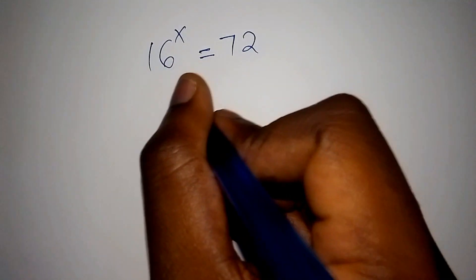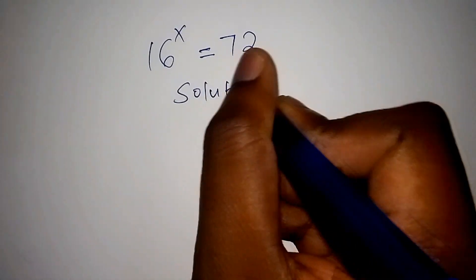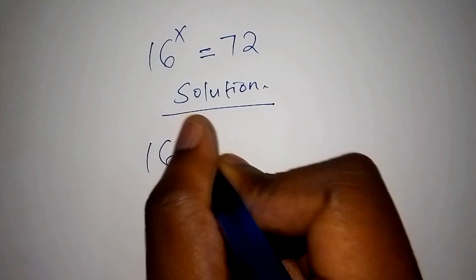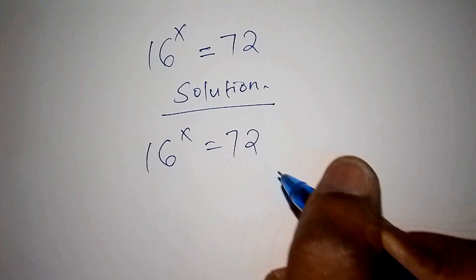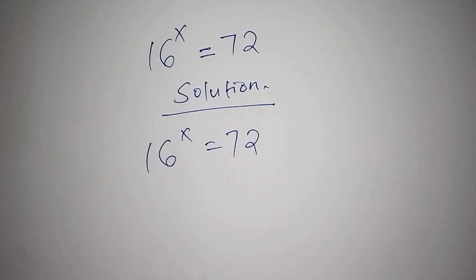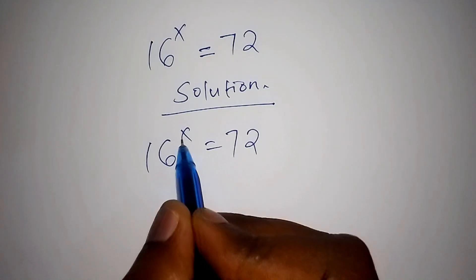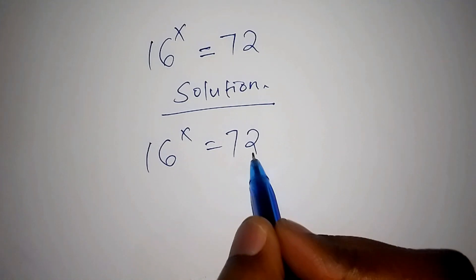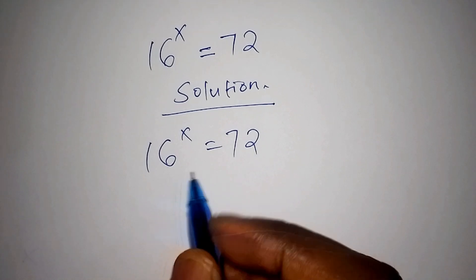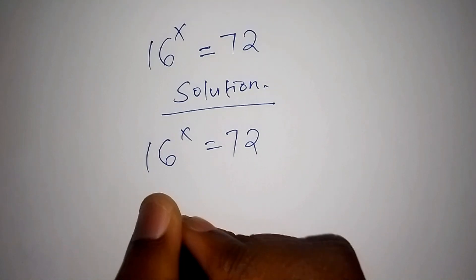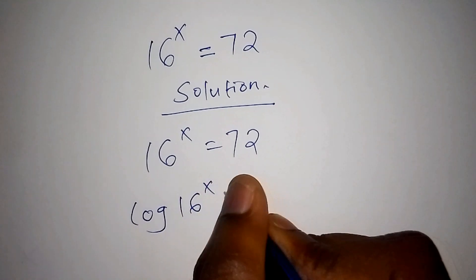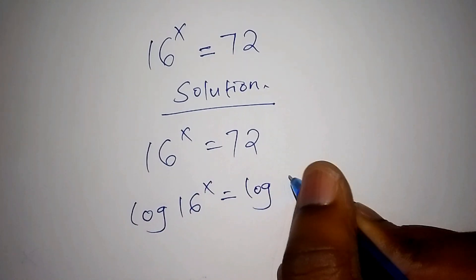Solution. We are asked to find the value of x. The first thing we need to do: 16 is the base and x is an index number. It's impossible to change 72 to a base of 16, so we need to use the logarithm. We shall have the log of 16 to the power of x is equals to the log of 72.